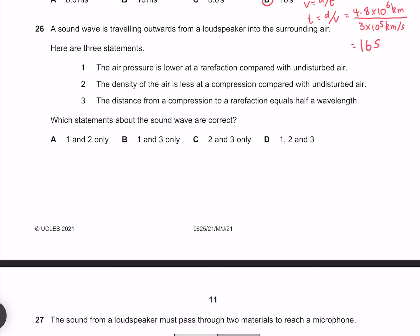A sound wave is traveling outwards from a loudspeaker into the surrounding air. Here are three statements. The air pressure is lower at a rarefaction compared with the undisturbed air, which is true. The density of the air is less at a compression compared with undisturbed air, which because at a compression we would expect air to be closer together and therefore the density to be greater, this must not be true. The distance from a compression to a rarefaction equals half a wavelength. This is true because a wavelength would be a compression to a compression with a rarefaction halfway in between, meaning that a compression to a rarefaction must be half a wavelength. That means 1 and 3 are correct. So our answer must be B.